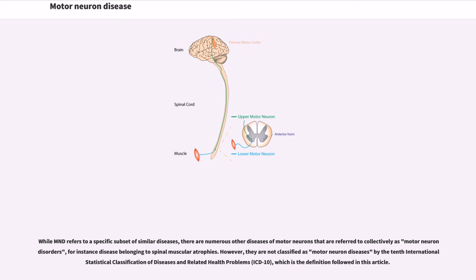While MND refers to a specific subset of similar diseases, there are numerous other diseases of motor neurons that are referred to collectively as motor neuron disorders, for instance diseases belonging to spinal muscular atrophies. However, they are not classified as motor neuron diseases by the 10th International Statistical Classification of Diseases and Related Health Problems, ICD-10, which is the definition followed in this article.